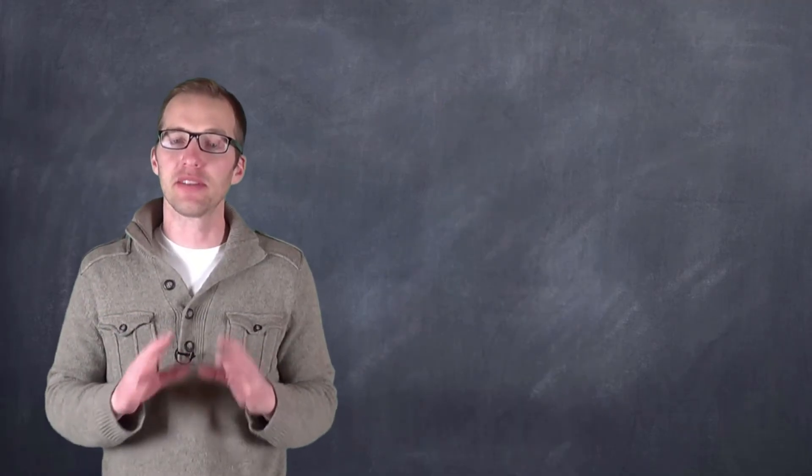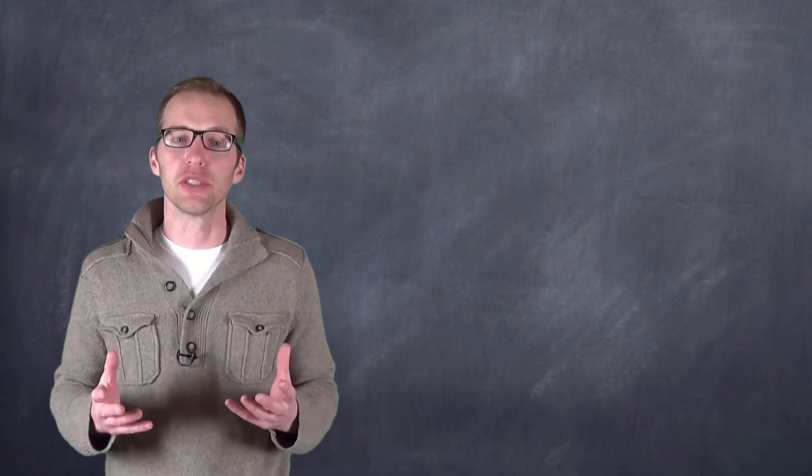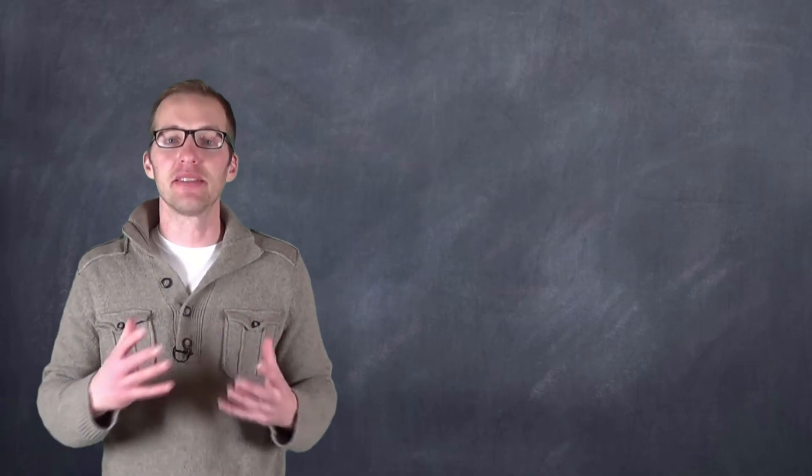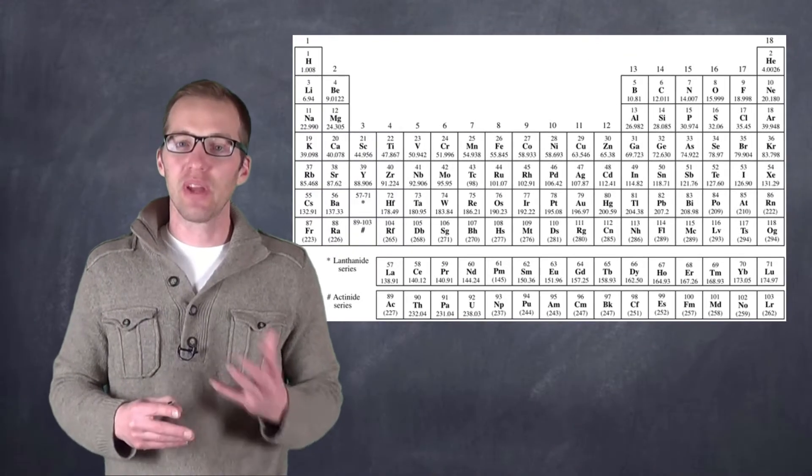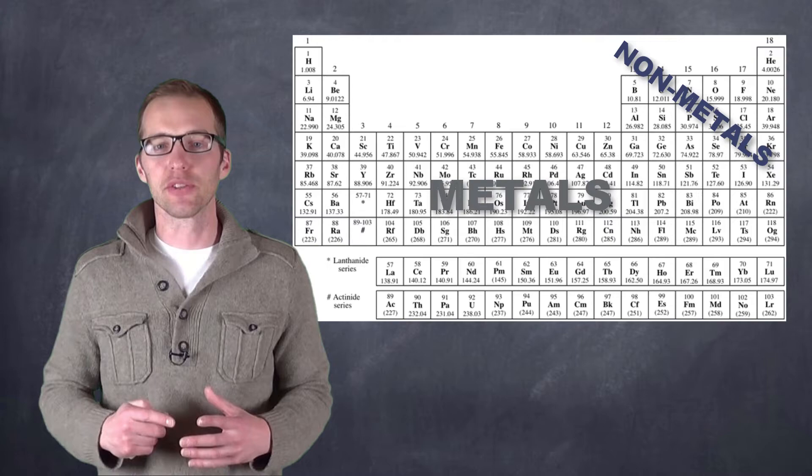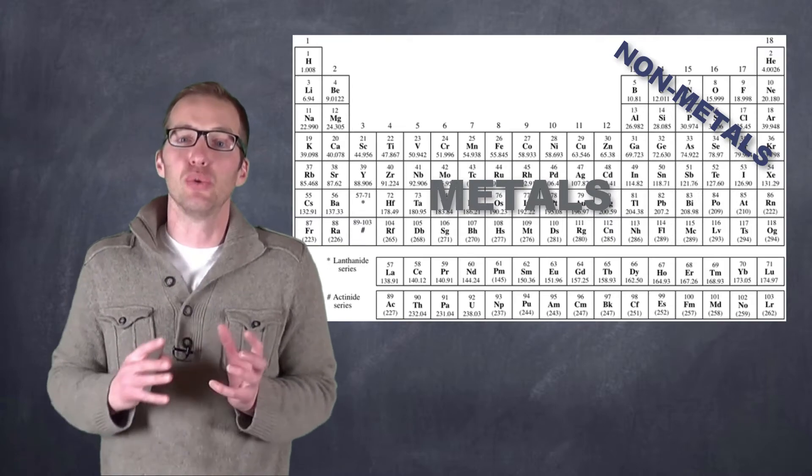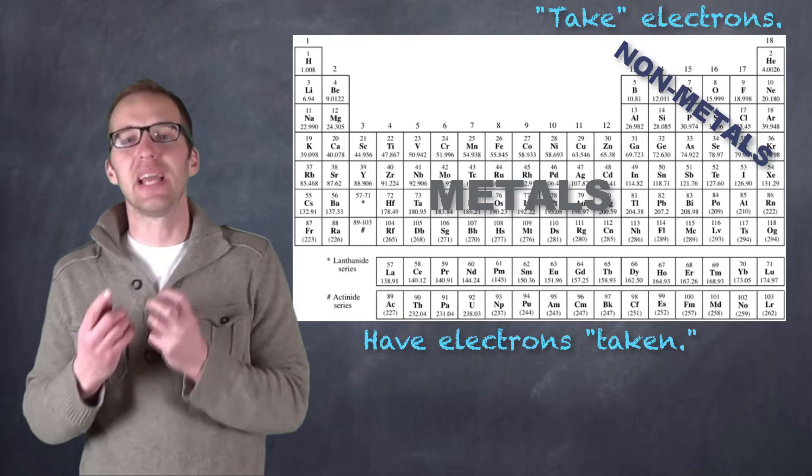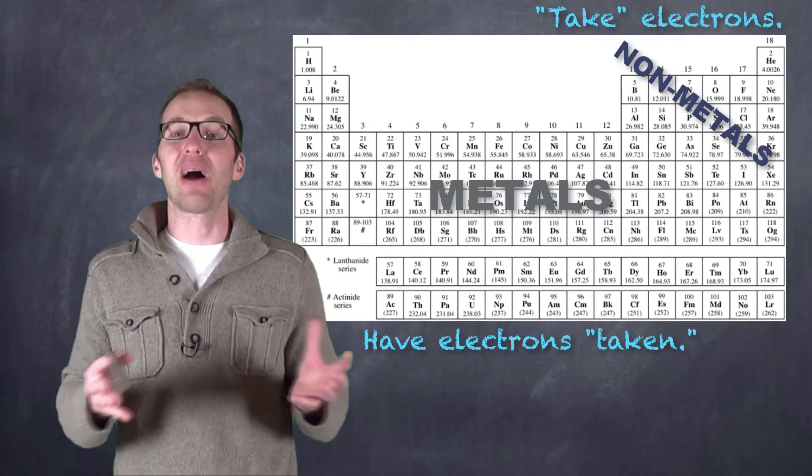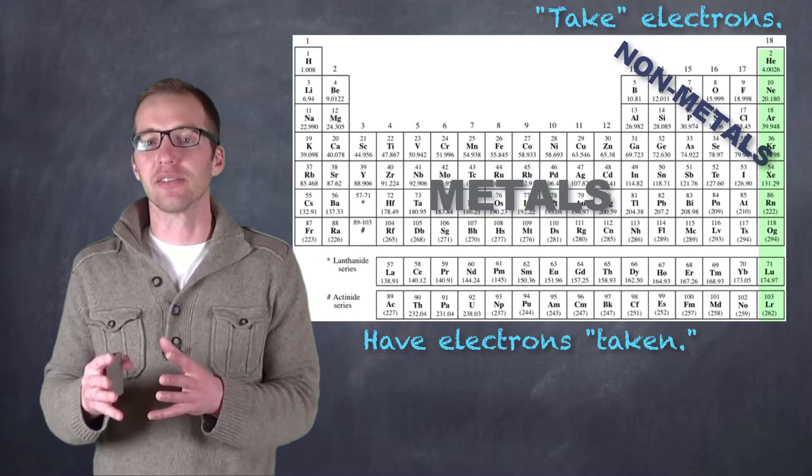Now, in illustrating ionic bonds and how they form using our Lewis structures, we have to keep in mind that this is involving a transfer of electrons. And we have to take a look at the periodic table again to remember why this transfer occurs. We have metals on the left and we have non-metals on the right. Now, metals show a tendency to lose or donate electrons, whereas non-metals show a tendency to gain electrons.